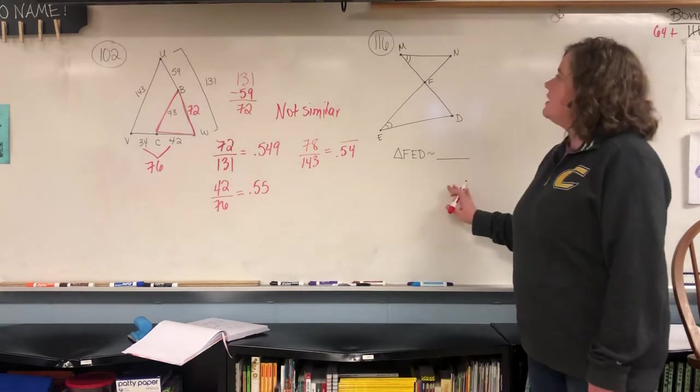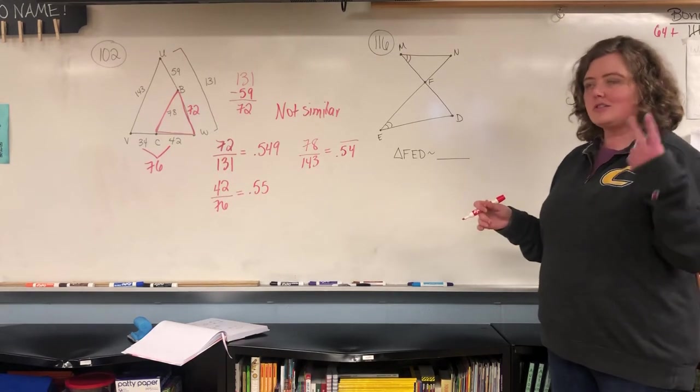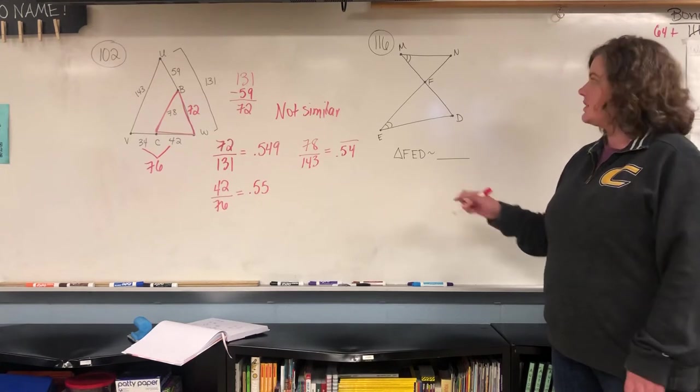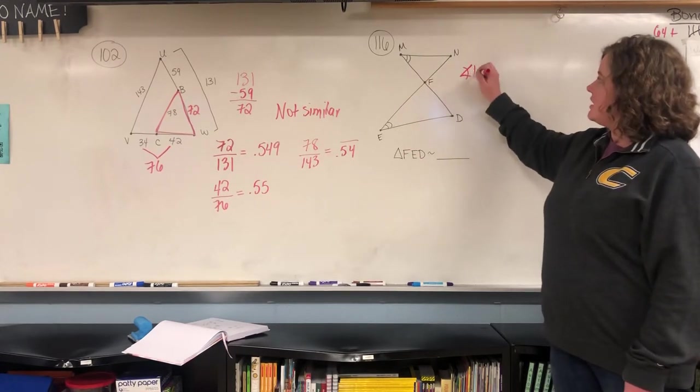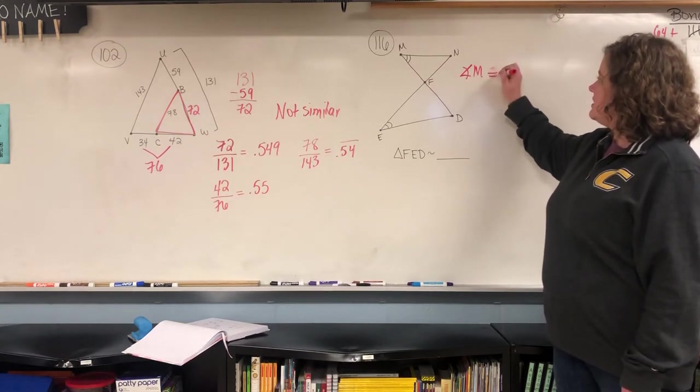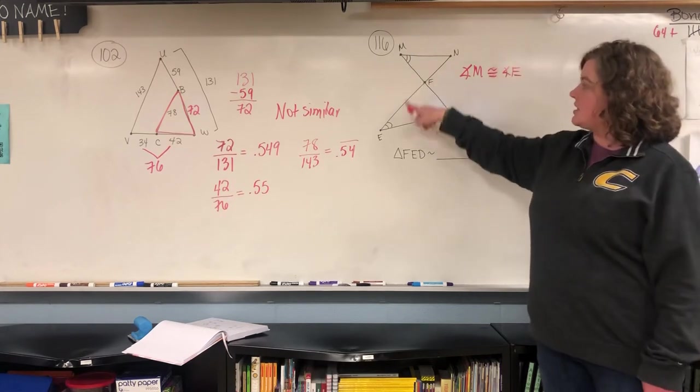Now in this one, we talked about angle-angle similar, so you just needed to show that two of the angles are the same in both triangles. So look, M and E are the same. So angle M is congruent to angle E. They both are the same markings.